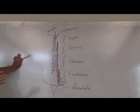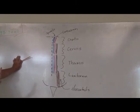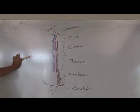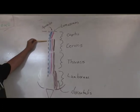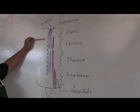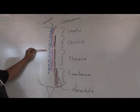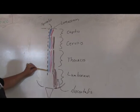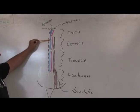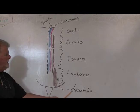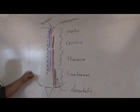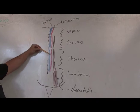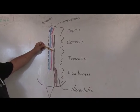The erector spinae muscles as a group allow you to stand erect, maintain posture, and extend and laterally flex the vertebral column. Looking at a diagram: from spinous processes going medial to lateral, we encounter spinalis (blue muscles), longissimus (red muscles), and iliocostalis (brown muscles). These three groups are always in the same order from medial to lateral: spinalis, longissimus, iliocostalis.